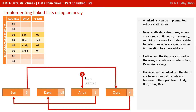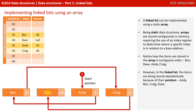A linked list can be implemented using a static array. Being static data structures, arrays are stored contiguously in memory, requiring the use of an index register to determine where a specific index is in relation to a base or start address.